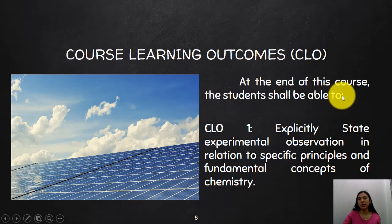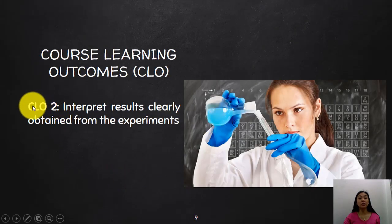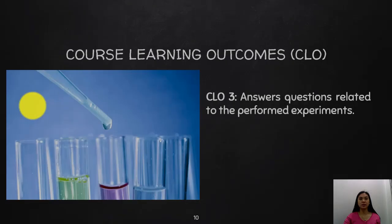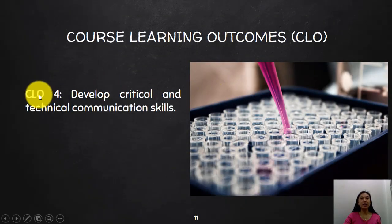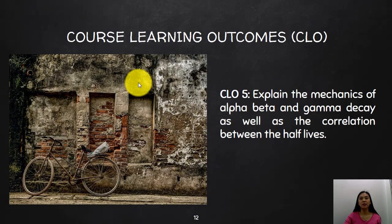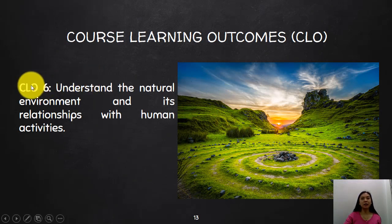At the end of this course, the student shall be able to: CLO number one, explicitly state experimental observation in relation to the specific principles and fundamental concepts of chemistry. CLO number two, interpret results clearly obtained from the experiments. CLO number three, answer questions related to the performed experiments. CLO number four, develop critical and technical communication skills. CLO number five, explain the mechanics of alpha, beta, and gamma decay as well as the correlation between the half-lives. CLO number six, understand the natural environment and its relationships with human activities.